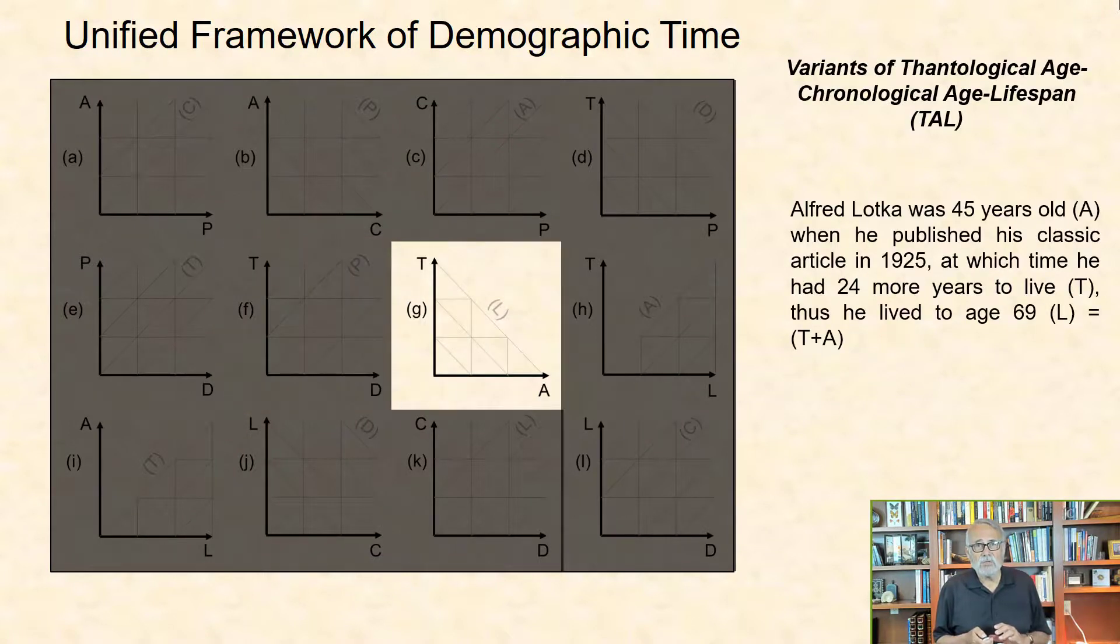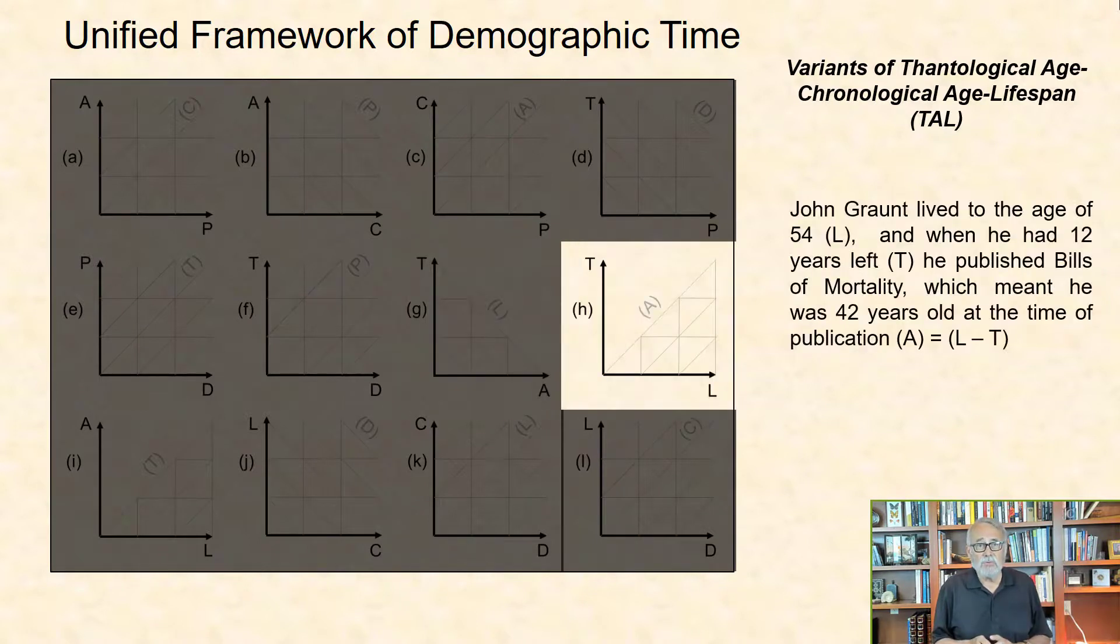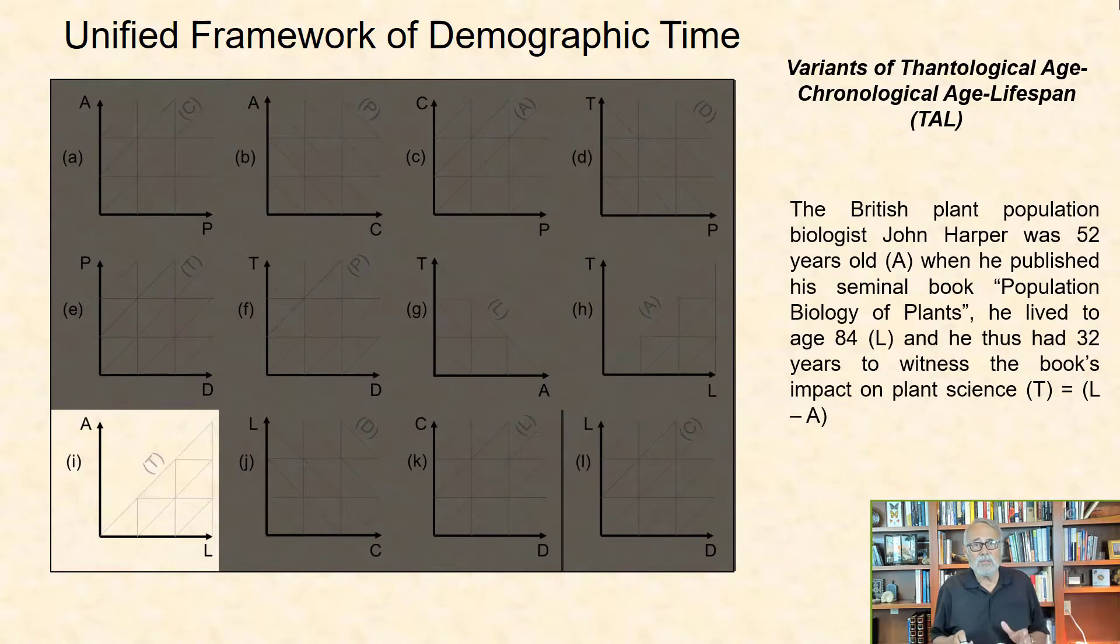Variants of Thanatological Age, Chronological Age, and Lifespan: The time already lived and the time still left to live sum to total lifespan. Alfred Lotka was 45 years old when he published his classic article in 1925, at which time he had 24 more years to live. Thus, he lived to age 69. John Graunt lived to the age of 54, and when he had 12 years left, he published Bills of Mortality, which meant that he was 42 years old at the time of publication. The British plant population biologist John Harper was 52 years old when he published his seminal book, Population Biology of Plants. He lived to age 84, and he thus had 32 years to witness the book's impact on plant science.